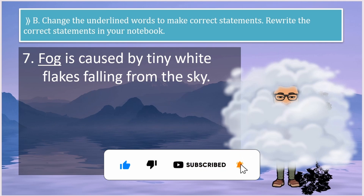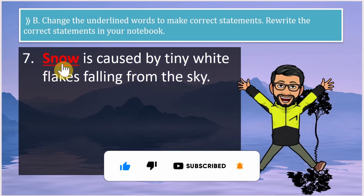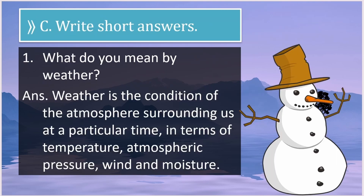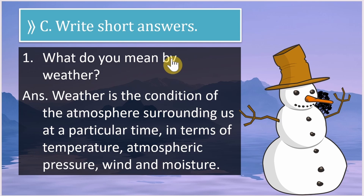Question 7: 'Fog is caused by tiny white flakes falling from the sky' — is this right? No. It should be: snow is caused by tiny white flakes falling from the sky. Now let us move on to the short answer questions.